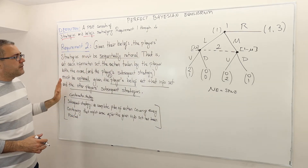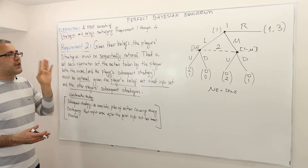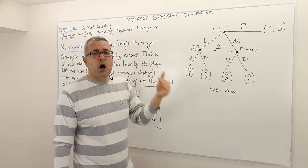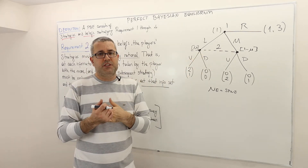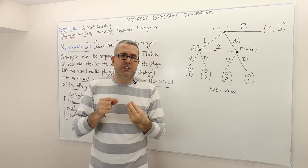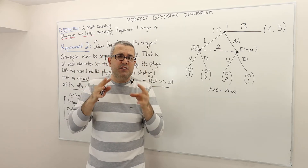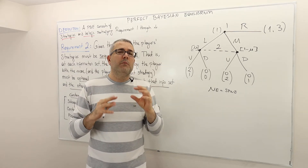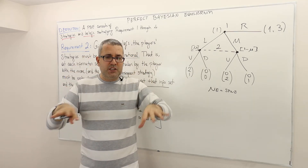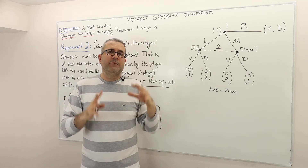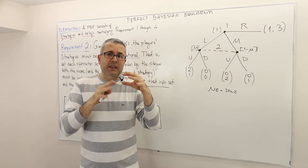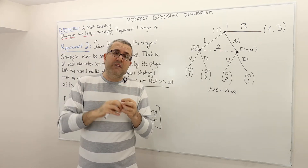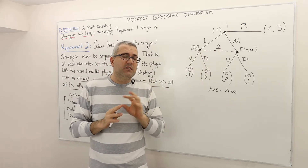So requirement two is sequential rationality. After each information set, players' continuation strategies must be optimal given their beliefs and given other players' strategies. Basically, remember the subgame perfection idea was that at every subgame the strategies chosen by players must be optimal — meaning Nash equilibrium. Here we do not have subgames, but we can look at an information set and all the branches that follow it and say the player who moves at that info set must be best responding given the other player's strategies, but that is not enough — also given his or her belief about which decision node they are at.